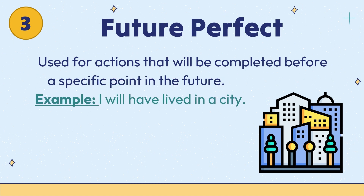Third is future perfect. Used for actions that will be completed before a specific point in the future. For example: I will have lived in a city.